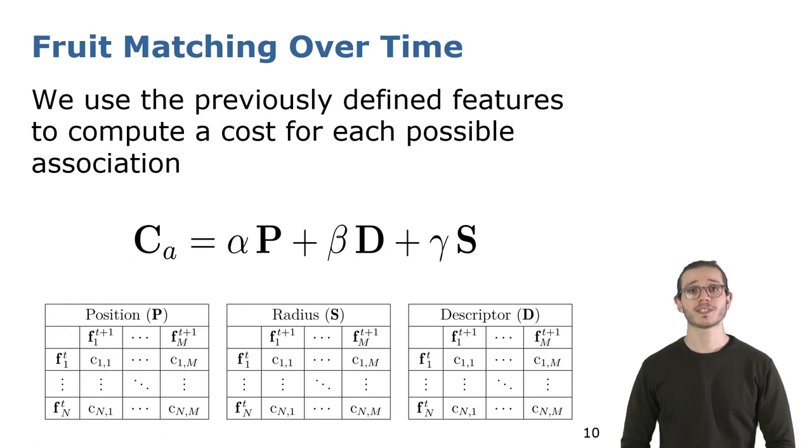We use the previously defined features to compute a cost for each possible association. The costs are computed by performing the Euclidean distance between corresponding strawberries of corresponding sections. We then merge our matrices in order to obtain a combined metric CA.